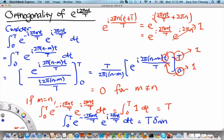equals T delta mn, where delta mn is the Kronecker delta.